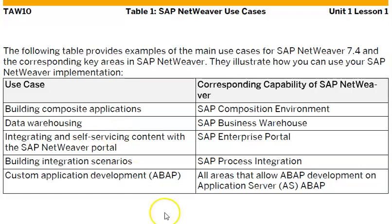If you want a data warehousing solution — data warehousing is a generic term, just like ERP or enterprise resource planning is a generic term. Any company can manufacture a data warehousing tool. The ETL process — extraction, transformation, load — actually comes under the data warehousing concept. SAP Business Warehouse is SAP's solution for that. If you want to integrate self-service in Netweaver Portal, that's the enterprise portal. SAP-to-SAP or SAP-to-non-SAP data transfer can be integrated through process integration.